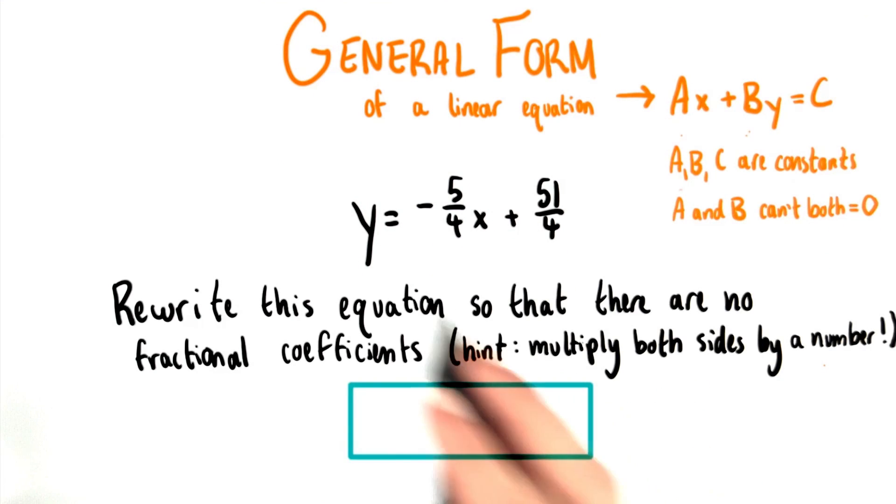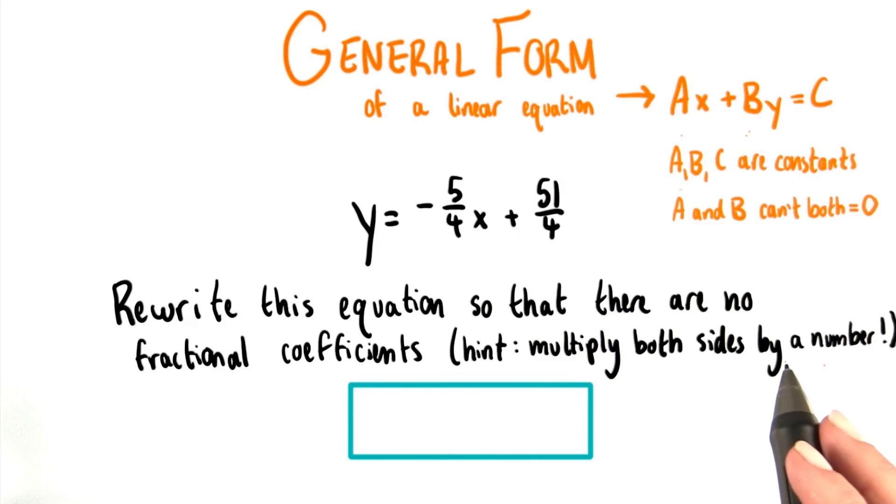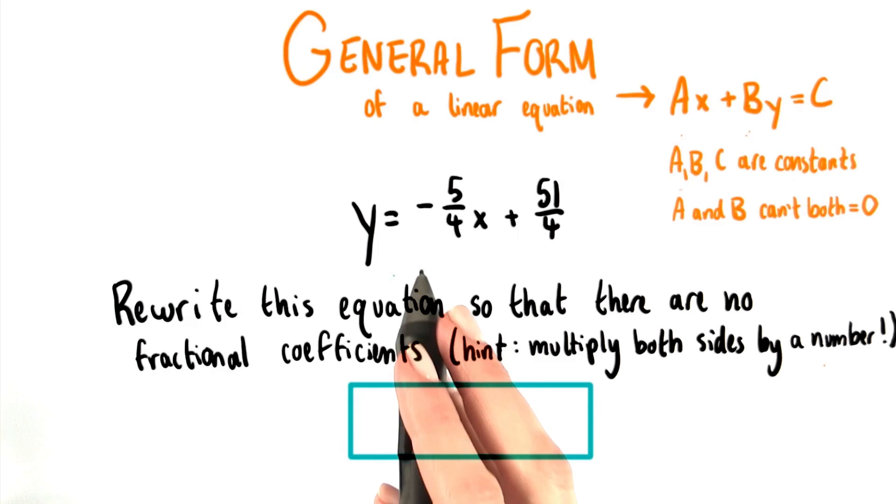What I'd like you to do then is to multiply both sides of this equation by some number so that there are no more fractional coefficients or constant terms. Try, however, to make this number you multiply both sides by the smallest number that you could use to get rid of the fractions.